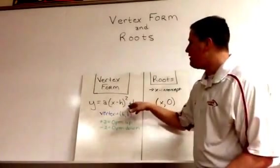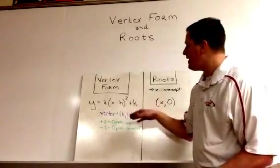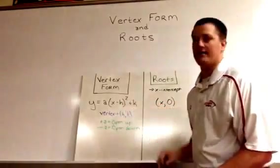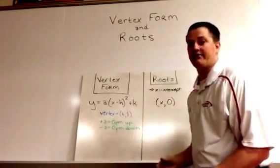The k represents the y value of the vertex. But when it's positive, it's actually a positive value. When it's a negative in front of it, that's a negative k.